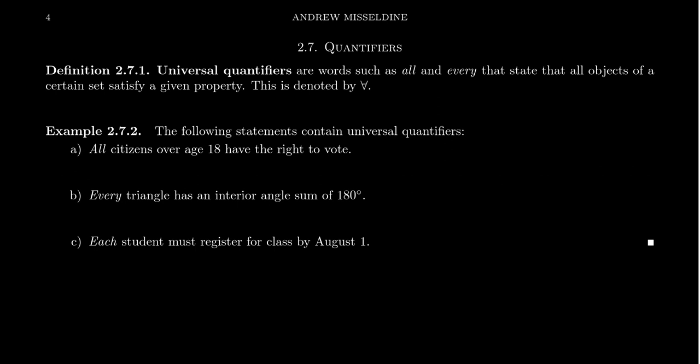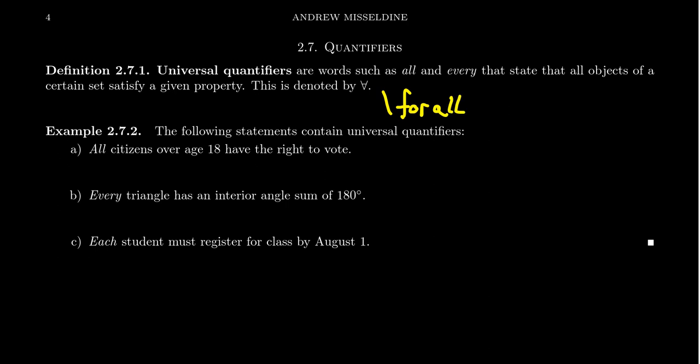The difference between 'every student' versus 'some students' is the idea of quantification. There are two types of quantifiers in statements that we must pay attention to in mathematics and logic. The first is the universal quantifier, which describes things like 'all' and 'every' — that is, every element that belongs to a set. The symbol we use is an upside-down A. Think 'for all' and write the A upside down. In fact, the LaTeX symbol for it is actually \forall.